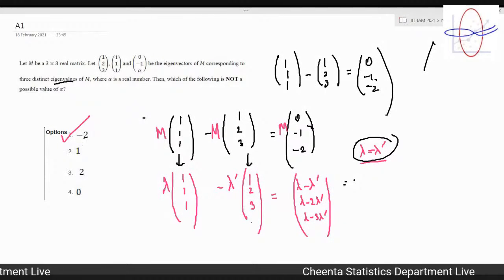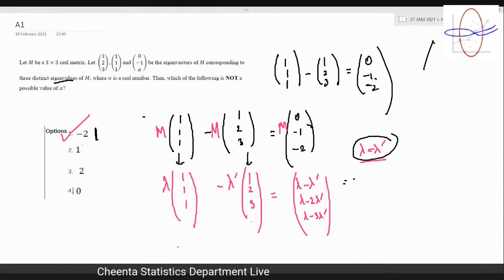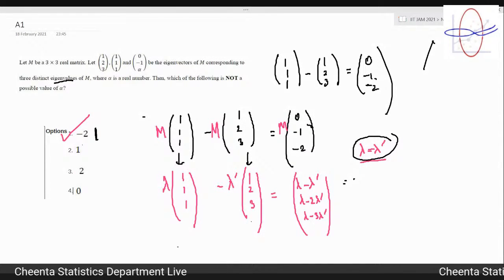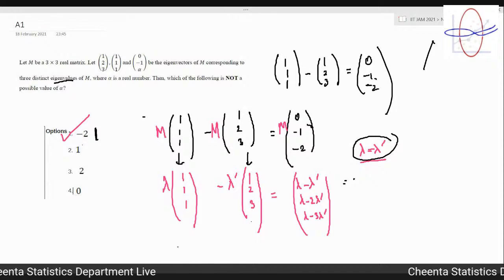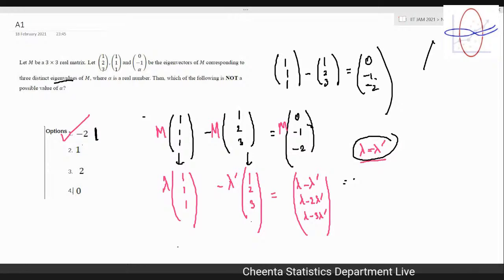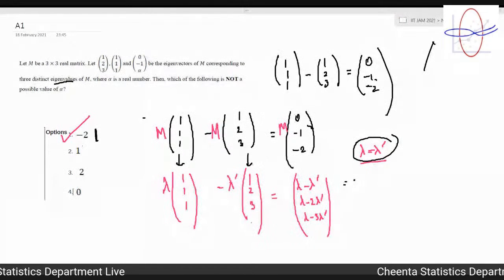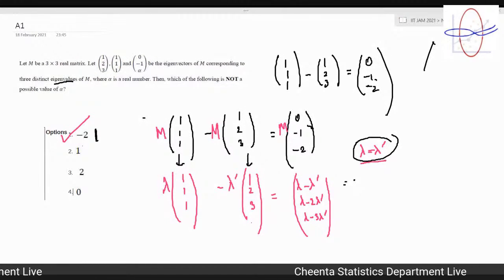Here the solution ends. Your homework lies in proving why 1, 2, and 0 are the possible values of alpha. Essentially you can prove that this must lie in different eigenspaces, and of course -2 is the only impossible choice over here since there's a linear combination of these two. That's the solution of this first question. We will come back to the solution of the next question soon. Bye.